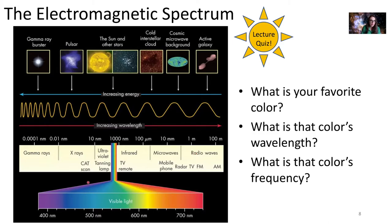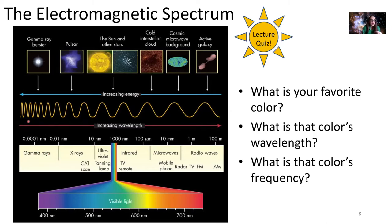Even shorter wavelengths include X-rays, used to image bones in your body, and the shortest wavelength light is called gamma rays. All of these wavelengths have an energy associated with them. Longer wavelengths have lower energy, while shorter wavelengths carry higher energy. A very long radio wave will have lower energy than a very short gamma ray wavelength.